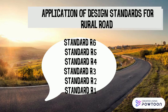Standard R4 provides medium geometric standard and serves intermediate trip lengths with medium traveling speeds. It is also usually with partial access control. Standard R3 provides low geometric standard and serves mainly local traffic. There is partial or no access control.